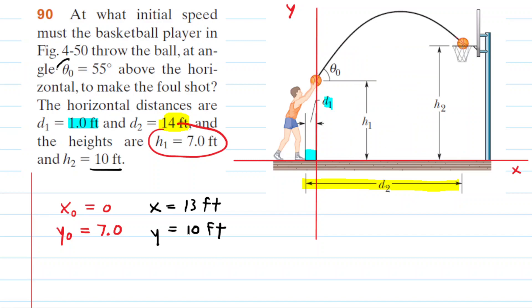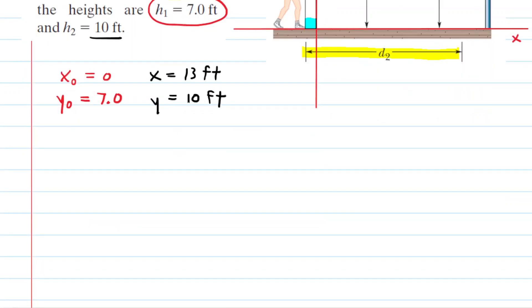Next, let's take into account the fact that the launch angle is 55 degrees. And we can use that angle to find the x-component of the initial velocity, which we're going to represent right here, and then the y-component of the initial velocity.